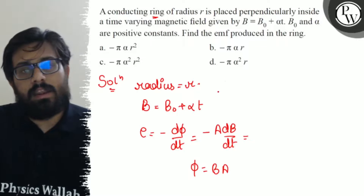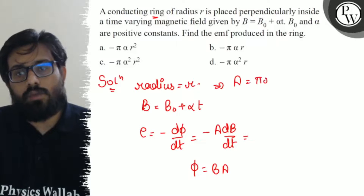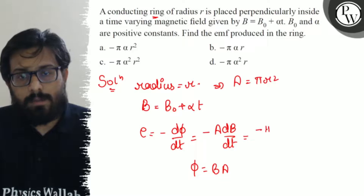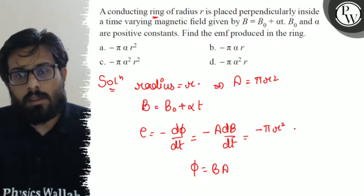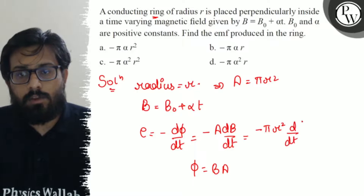For the ring, the area will be πr². So the expression becomes minus πr² · d/dt of B, where the value of B is B₀ + αt.